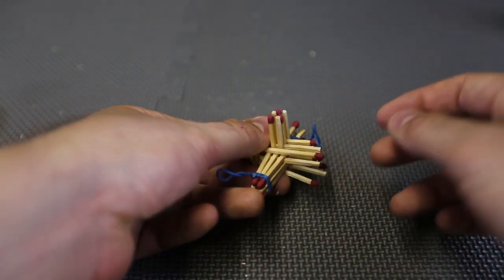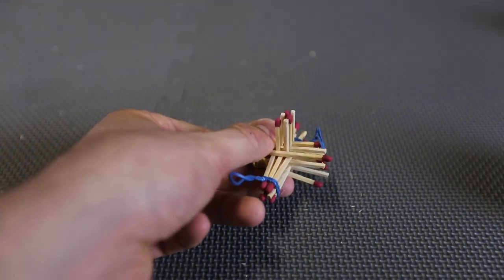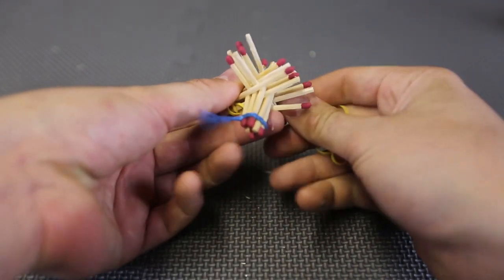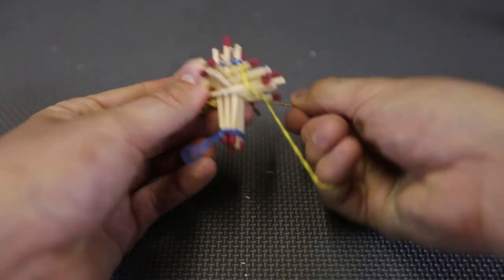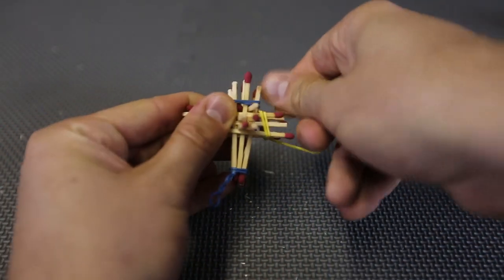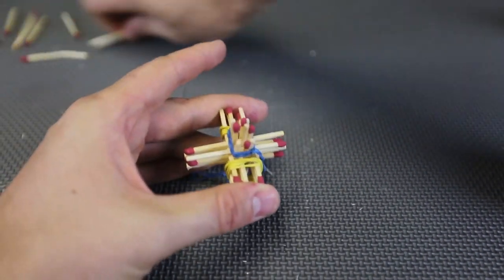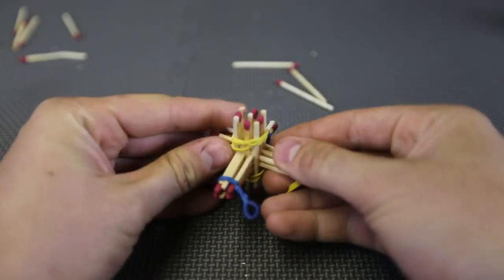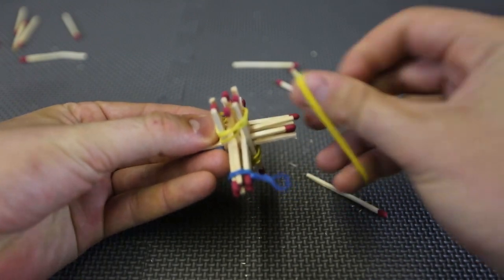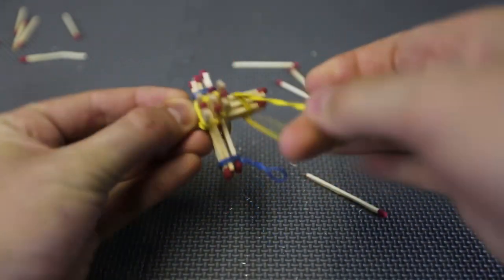Then we're gonna flip it up over. And then we're gonna grab another rubber band on this side. Boom. And that's what we got right here. Actually, we will need two more rubber bands because we're gonna put the rubber bands on each side of the matches.